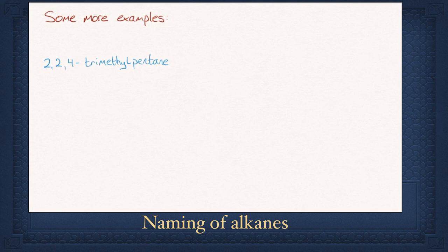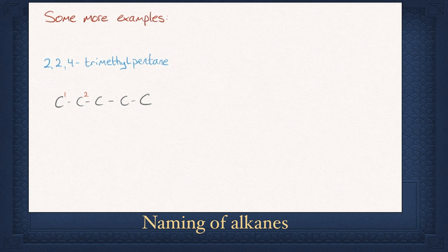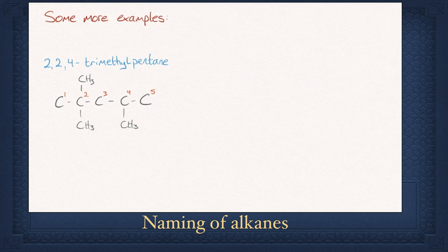You could be given the molecular structure and asked to name it, or you could be given the name of the molecule and asked to draw it. For example, 2,2,4-trimethylpentane. Step 1: draw out the longest continuous chain — in this case it is pentane. Step 2: number the carbons; it doesn't matter which side you count from as you are already given the position of the methyl groups. Step 3: there are three methyl groups due to the word trimethyl. Carbon 2 takes two CH₃ groups, whereas carbon 4 gets one methyl group. Step 4: fill in the hydrogens for all the other bonds and double check that each carbon atom has four bonds.